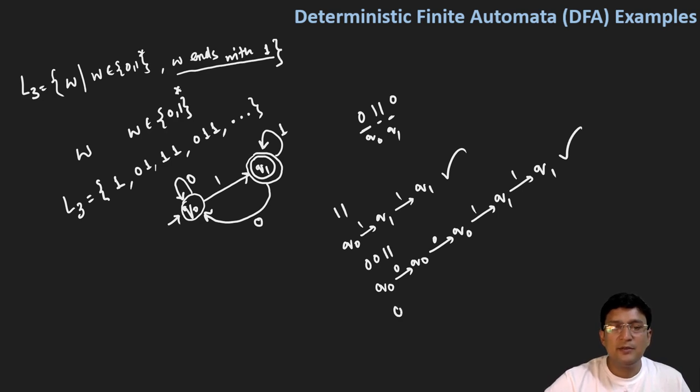Let's say we are taking a string 010 that should get rejected because this string is not ending with one, in fact it is ending with zero. So from q0 on 0 we remain at q0.